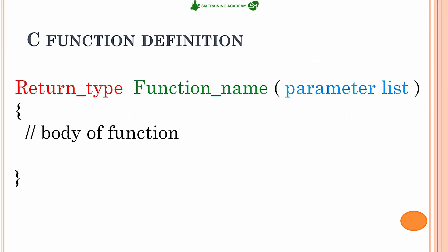This is the basic syntax for writing your user-defined function: the return type, function name, and within the parenthesis you can give the parameter list. You can give not only one parameter to a function but n number of parameters, and below that you provide the body of the function within flower braces. This is the function prototype syntax, and now we are going to write down one by one the different kinds of functions you can write in your C program in a user-defined manner.